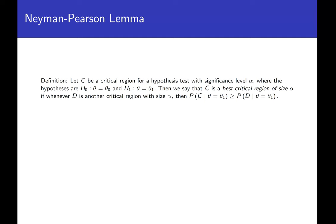The definition: C is going to be a critical region for some hypothesis test with a significance level of alpha. We're going to assume that our hypothesis test involves two simple hypotheses — you only have two possibilities for the parameter. Either the parameter is theta naught or the parameter is theta one. We're not doing compound hypotheses here, only simple hypotheses.